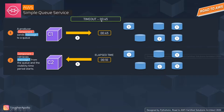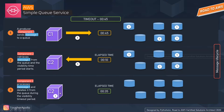In the second step, consumer component two takes message one and starts processing it. During the visibility timeout period of 45 seconds, the message is not returned to any other consumer who sends a receive request — it is not visible to other consumers. In the third step, the consumer deletes the message from the queue before the timeout expires, within 35 seconds, to prevent reprocessing by other consumers.